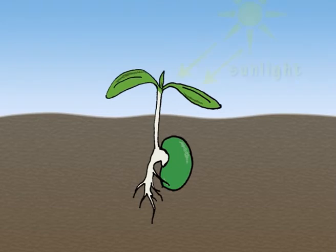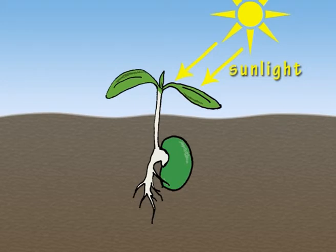Only after the leaves have developed does the young plant begin to make its own food by photosynthesis.